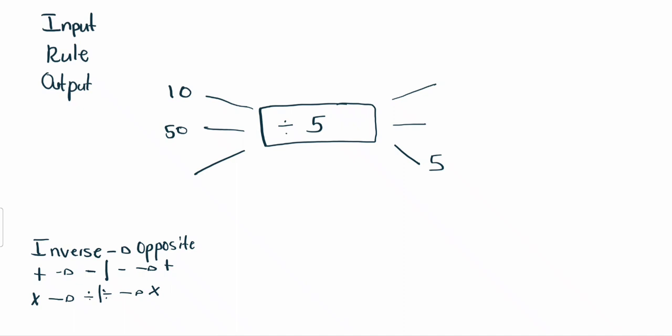Now, this is quite simple. 10 divided by 5 will give you 2. 50 divided by 5 will give you 10.